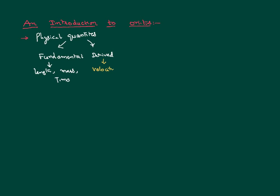For example, velocity is defined as rate of change of displacement, so we can write it as displacement divided by time. It is very clear that velocity is not a fundamental physical quantity — rather, it is dependent on two other fundamental quantities, displacement and time. Similarly, acceleration, force, work done, and so on are all called derived physical quantities. Fundamental physical quantities don't depend on anyone else, whereas derived physical quantities depend on the fundamental quantities.